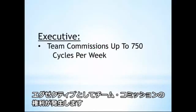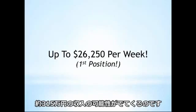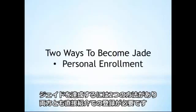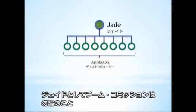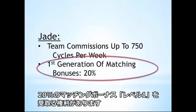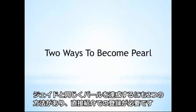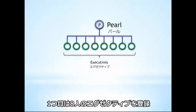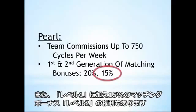As an executive, you have access to the entire team commission structure, which means you can earn up to $26,250 per week just from the first position in the plan. The next rank is Jade — there are two ways to become a Jade: personally enroll four executives, or personally enroll eight distributors. As a Jade, you're entitled to all team commissions plus a first generation of matching bonuses at 20%. Following Jade is Pearl, which requires either personally enrolling eight executives or 12 distributors, and qualifies you for a second generation of matching bonuses at 15%.